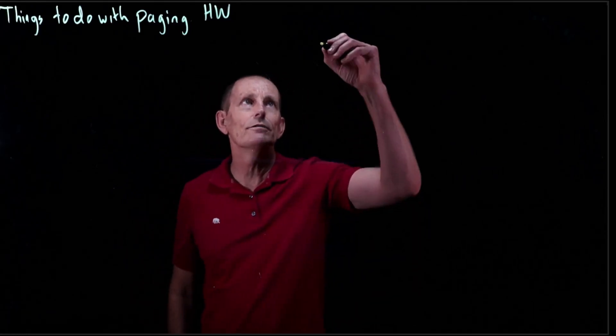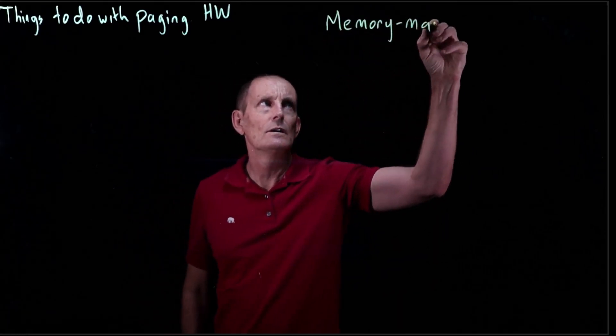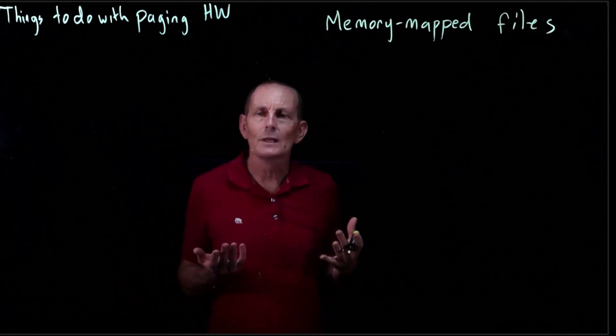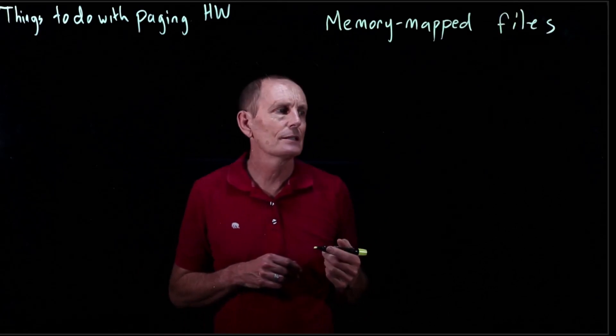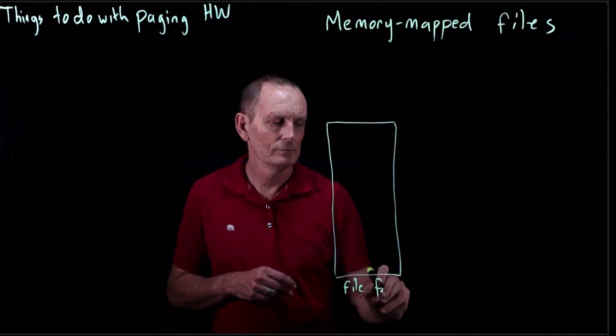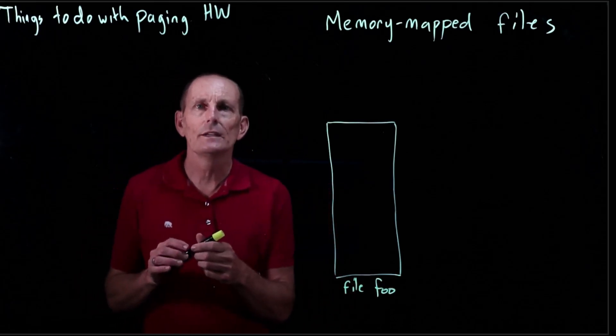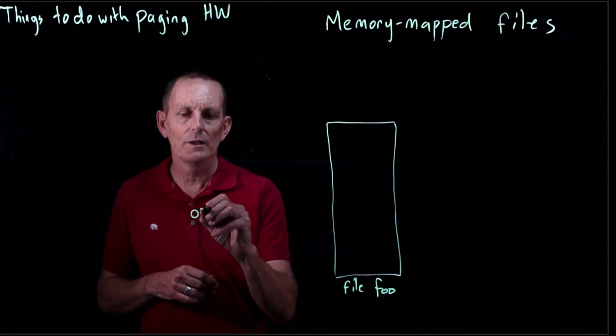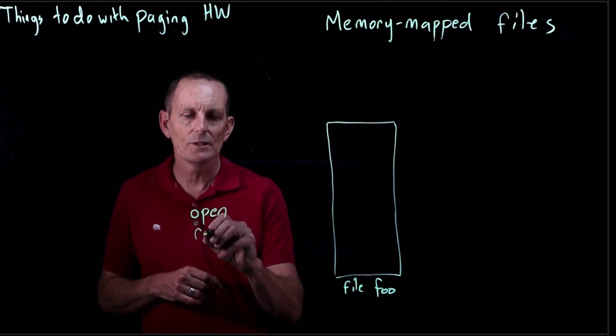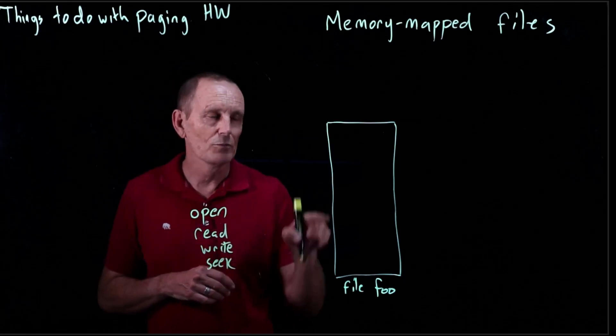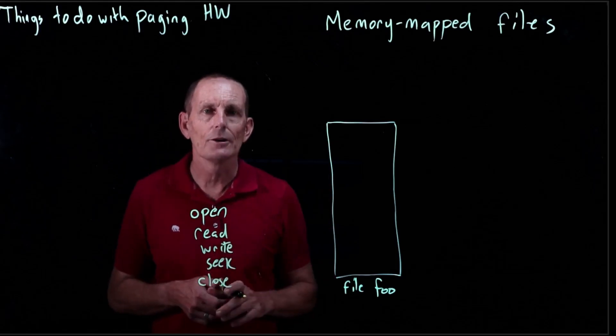Another thing you can do with paging hardware is a new feature: memory-mapped files. Normally the way to access a file is to open a file descriptor and then issue read requests and write requests. So we do an open, a sequence of reads, writes, seeks, which move into the file, and close.